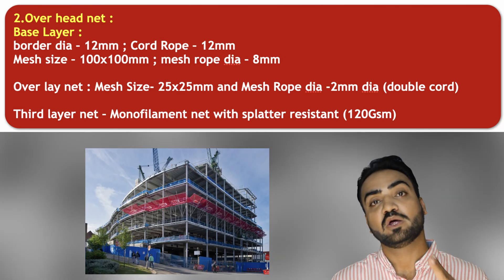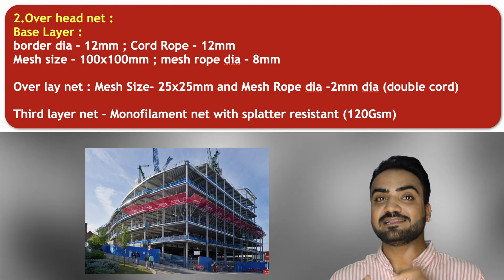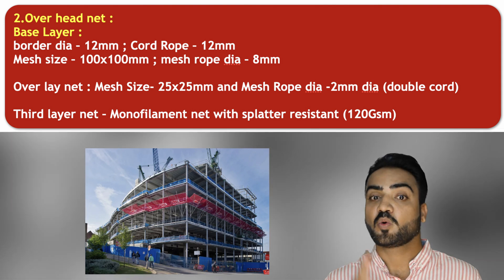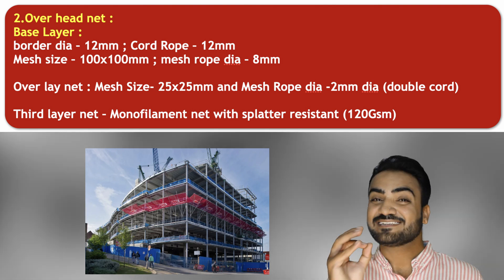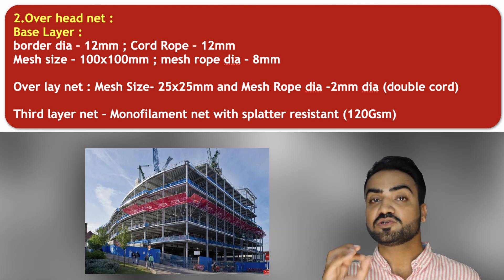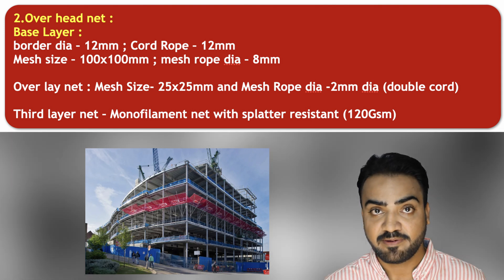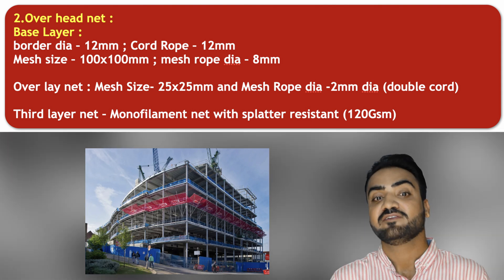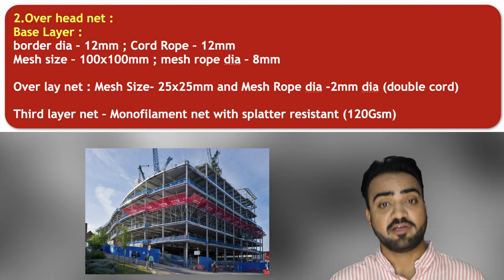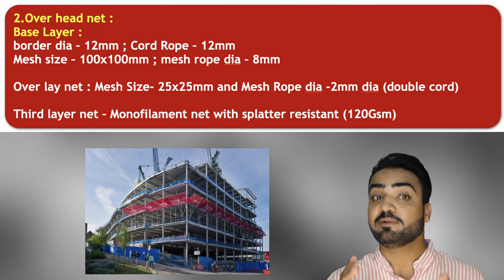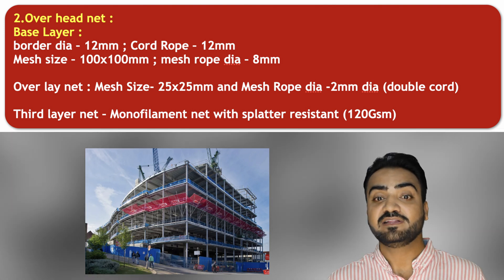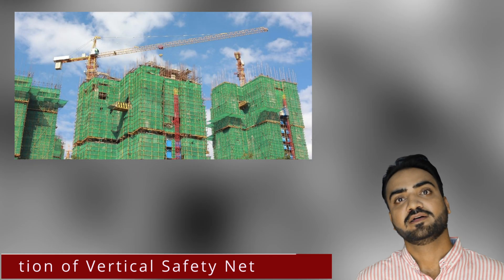For the overhead net, provided as overhead protection, the configuration consists of a base layer, overlay net, and third layer net. Base layer specs: border diameter 12 mm, cord rope 12 mm, mesh size 100 by 100 mm, mesh rope diameter 8 mm. The overlay (secondary) net has mesh size 25 by 25 mm and mesh rope diameter 2 mm with double cord. The third layer is a monofilament net with splatter resistance of 120 GSM.